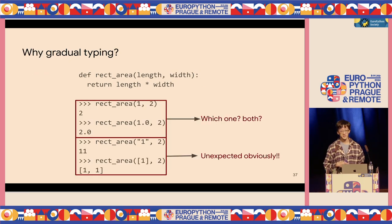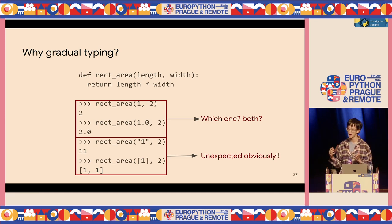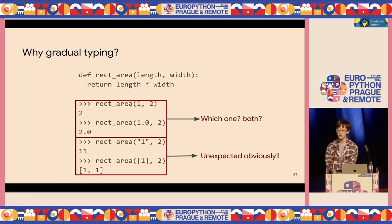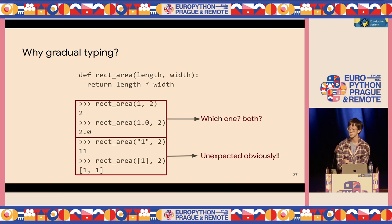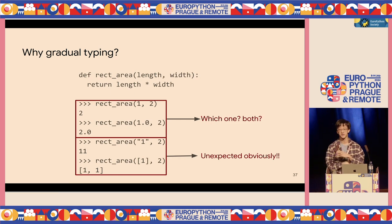Why do we need gradual typing? If you look at unannotated code, you can put anything into a function and get surprising outcomes — like string multiplied by integer, or a list multiplied by integer — definitely not what you'd expect when calculating the area of a rectangle.